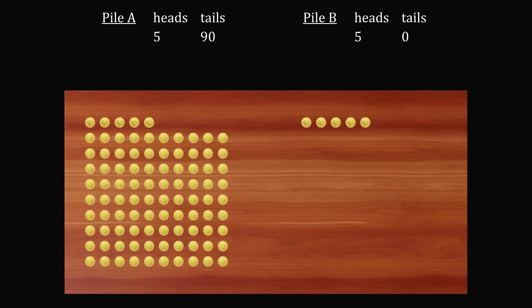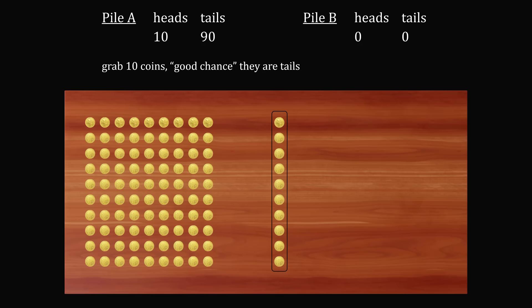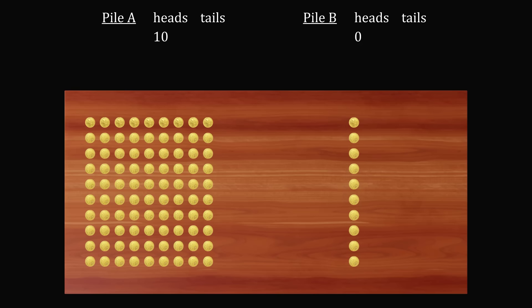So let's reset back to the beginning where we have 100 coins on the left side, which has 10 heads and 90 tails. Now, instead of trying to target the five heads, what if instead we grab tails? Let's say we just grab 10 coins. It's a good chance that all of the coins are tails. So let's say we take these 10 coins and we move it to the other side. So suppose we were lucky and all 10 of these were tails.